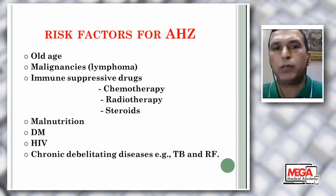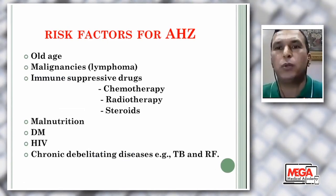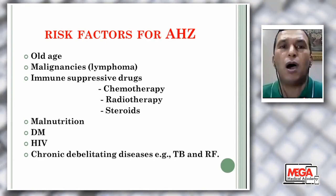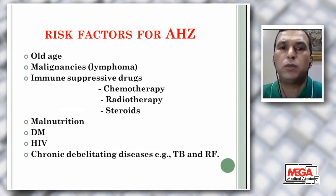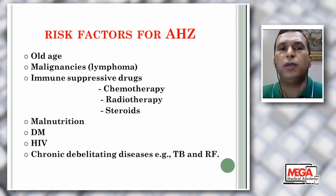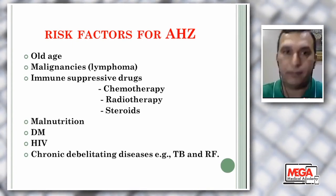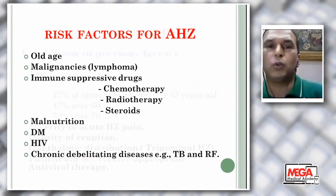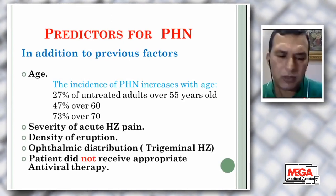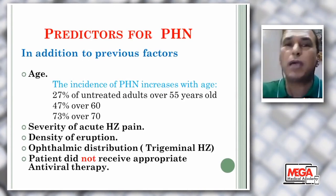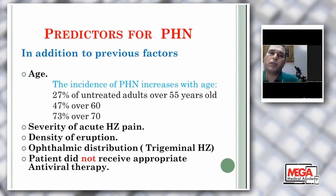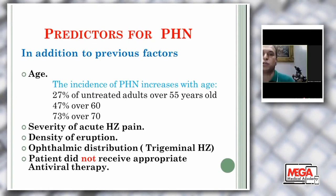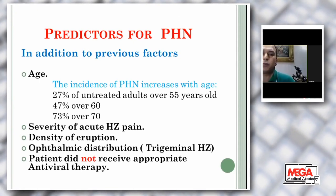This is one of the most important slides in my presentation — risk factors for acute herpes zoster. First, age: older age is a high-risk group. Malignancies, especially lymphoma; immunosuppressive drugs, chemotherapy, radiotherapy, and steroids; malnutrition; diabetes; HIV; and chronic debilitating diseases like TB and renal failure. What are the predictors to develop post-herpetic neuralgia? Age is the most important factor. There is a three-fold increase in the incidence of post-herpetic neuralgia by the age of 70.